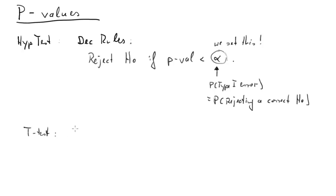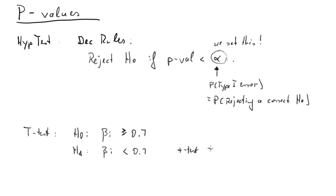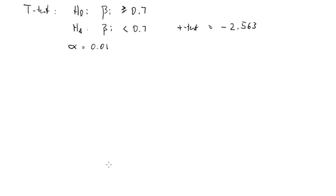Let's say you performed a t-test where the null hypothesis is that beta_i, a coefficient in a regression, equals 0.7, and the alternative is that beta_i is smaller than 0.7 — a one-tailed test. The null hypothesis can be considered as beta_i being larger or equal to 0.7, but it's exactly the same as setting beta_i equal to 0.7. The calculated test statistic is negative 2.563. We need an alpha; let's set alpha to one percent, i.e. 0.01.